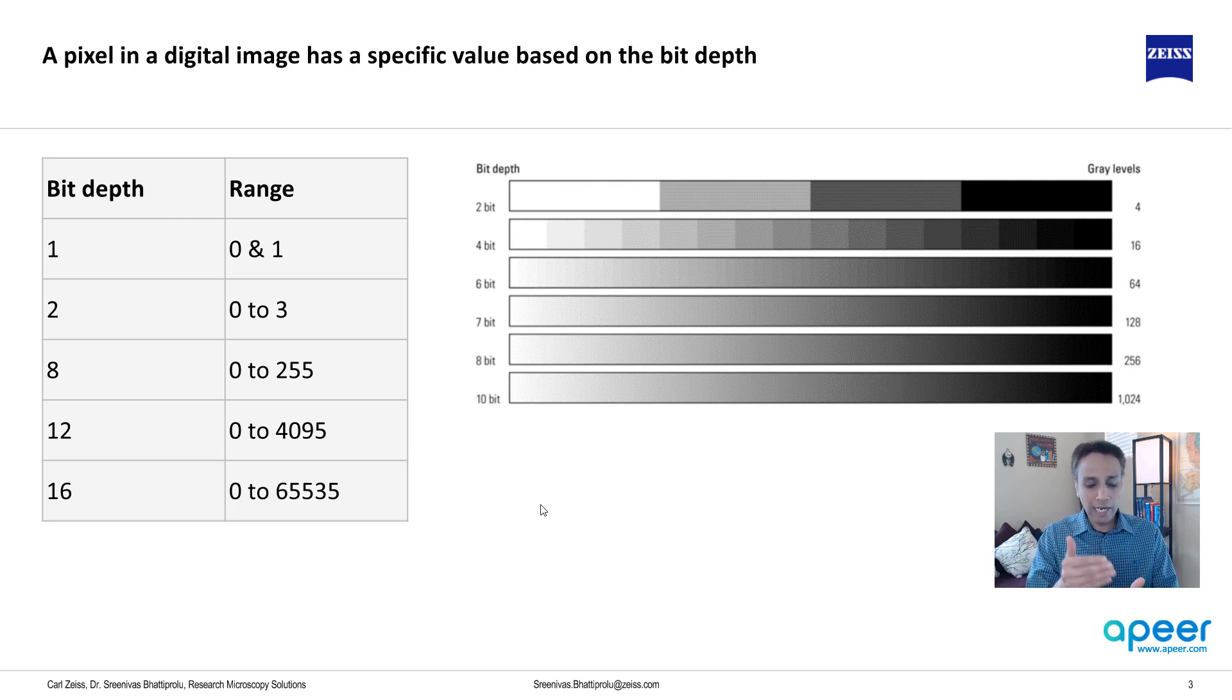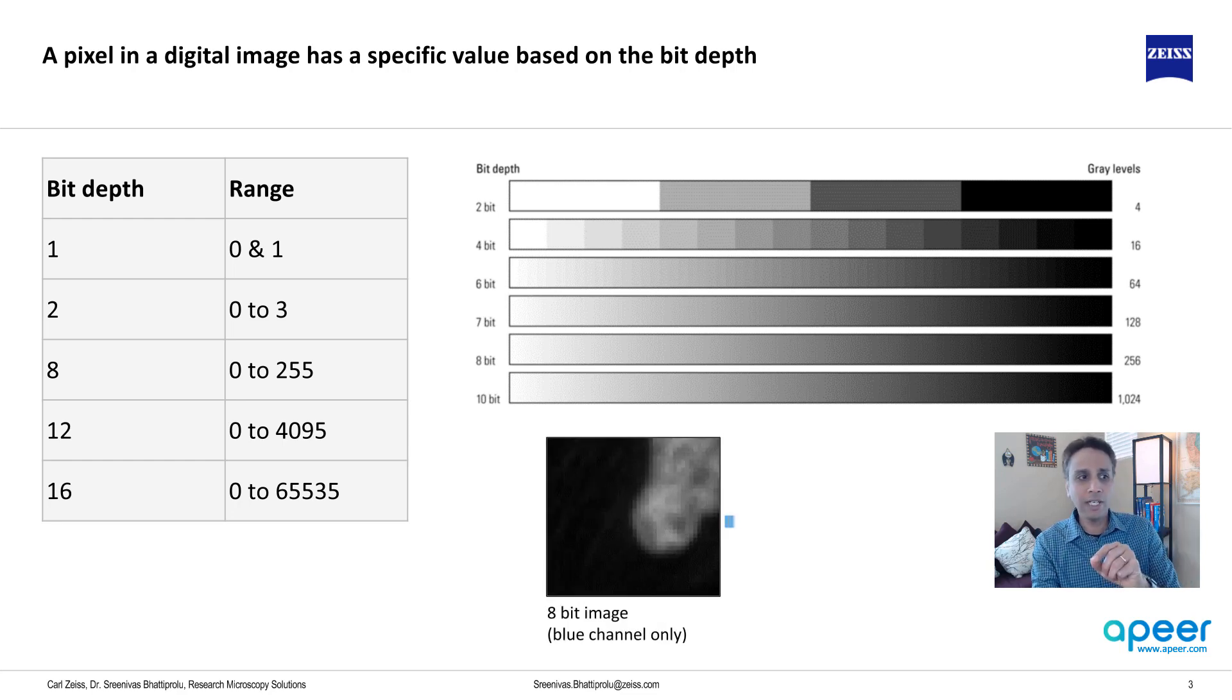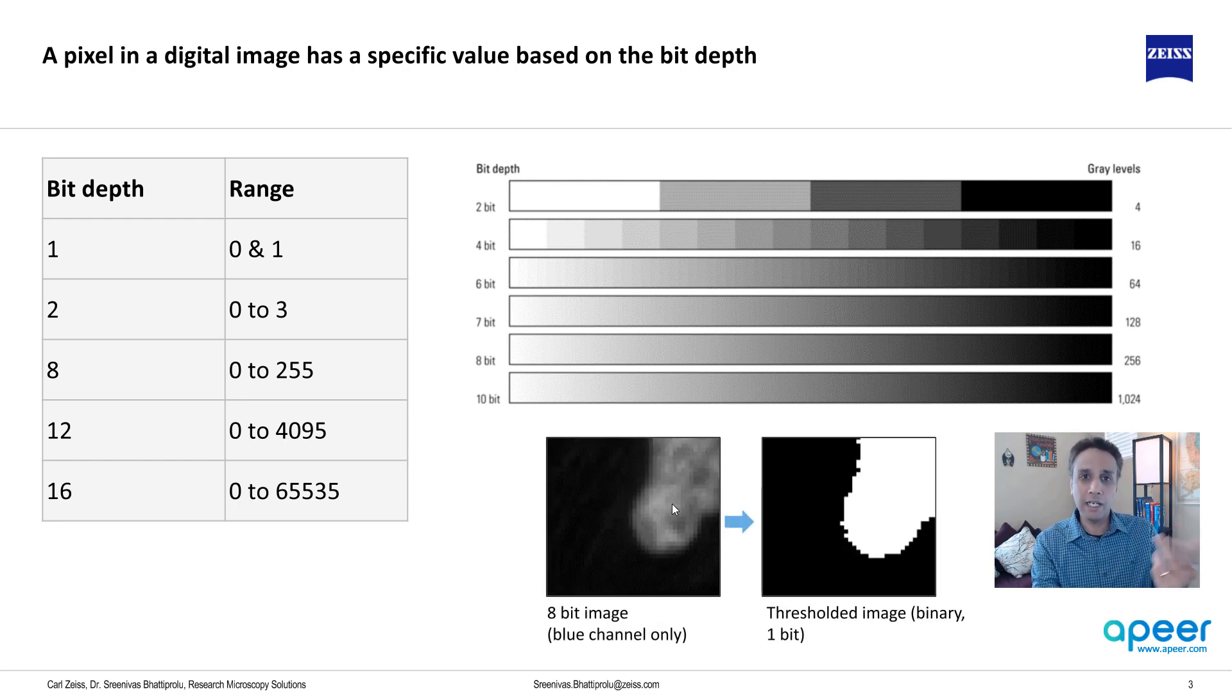So typically, if you're handling images in ImageJ or any other software, you probably converted images from RGB to 8-bit or 16-bit, and this is exactly what it means. Now, when you segment an image, you're converting every pixel into either a 0 or a 1. So if you take this blue image that I had earlier that represents a nucleus, now if you threshold it or segment it, you either convert each pixel into a value of 0 or 1. So this is a binary image. So segmentation is nothing but binarization or converting an image into a binary image, a 1-bit depth image.